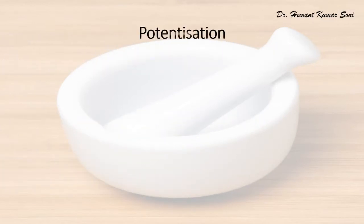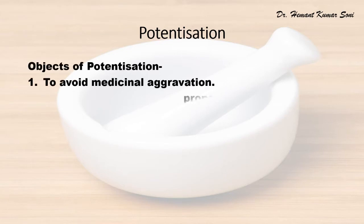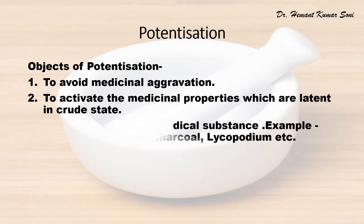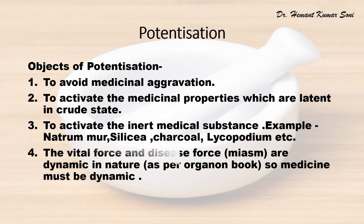We have learned in the history of potentization that symptoms are aggravated by the material dosage. So by the Hahnemannian method of potentization, we can reduce the aggravation of symptoms. This is the first object of potentization — to avoid medicinal aggravation.